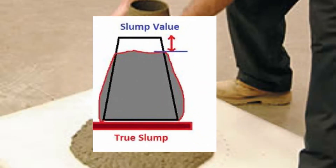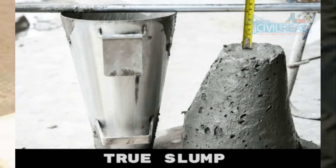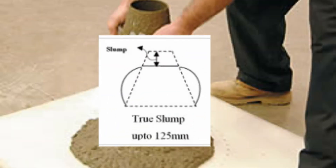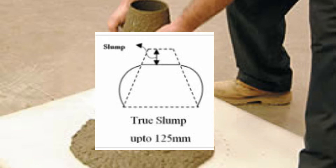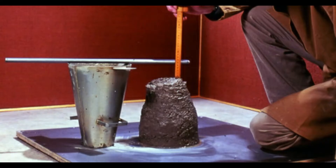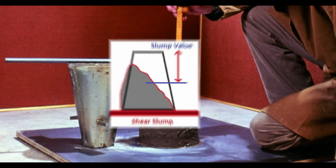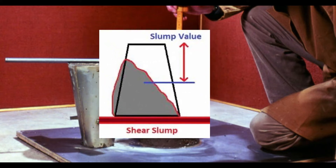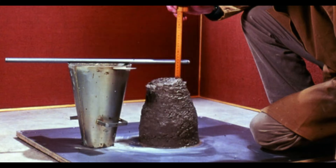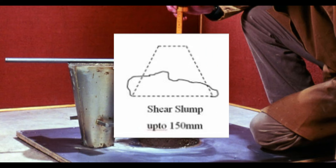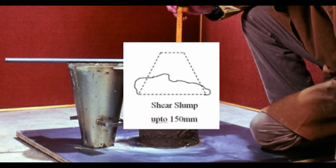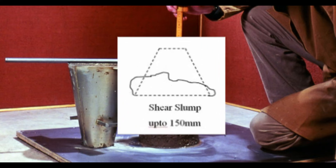In a true slump, concrete just subsides shortly and more or less maintains the mold shape. This type of slump is most desirable. If one half of the cone slides down in an inclined plane, it is called a shear slump. Shear slump indicates lack of cohesion in the concrete mix.